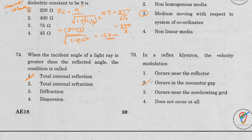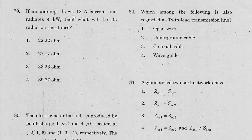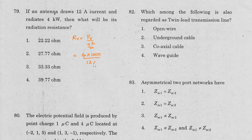Question 79: If an antenna carries 12 amperes of current and radiates 4 kilowatts, the radiation resistance RR = power radiated / I² = 4000 / (12 × 12) ≈ 27.77 ohms. The basic relationship is P = I² × R.